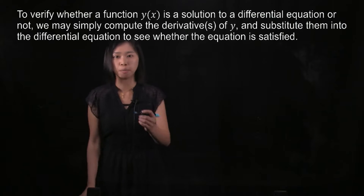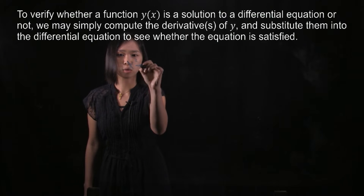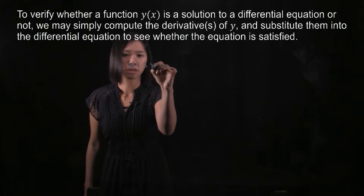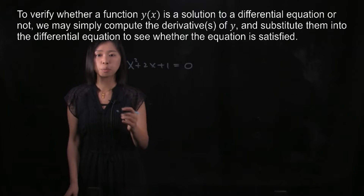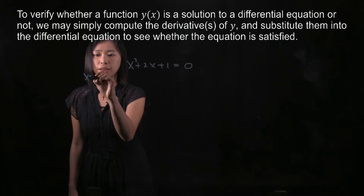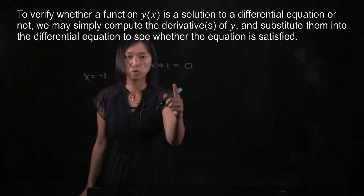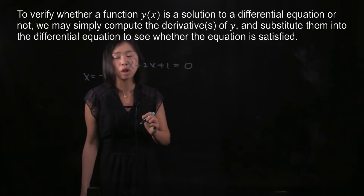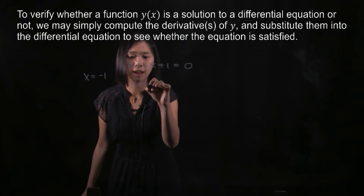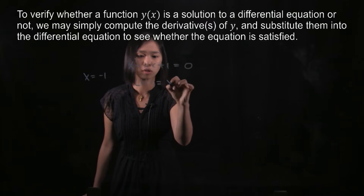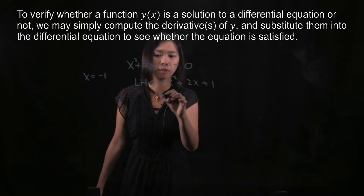We'll start with a simple example on a quadratic equation like x squared plus 2x plus 1 equals 0. I would like to prove that x equals negative 1 is a solution to this quadratic equation. So we start with the left hand side, which is x squared plus 2x plus 1.